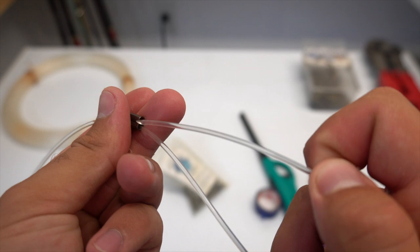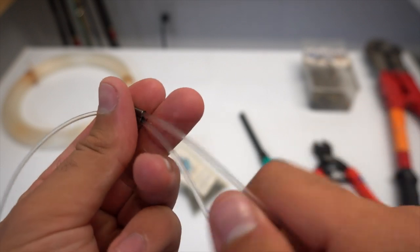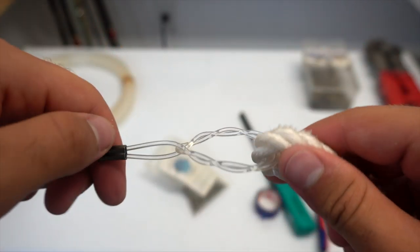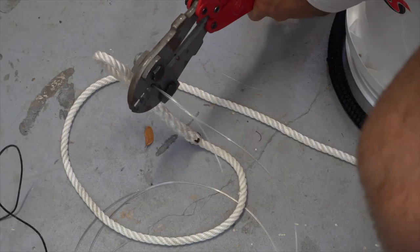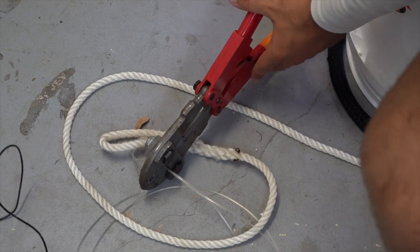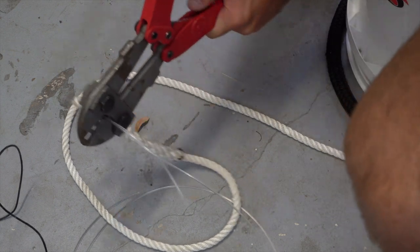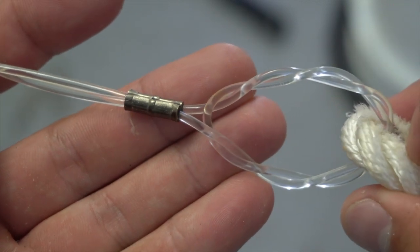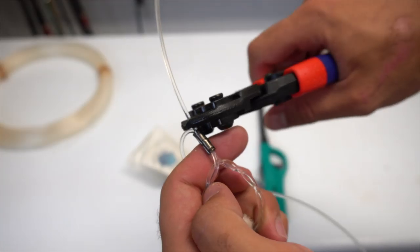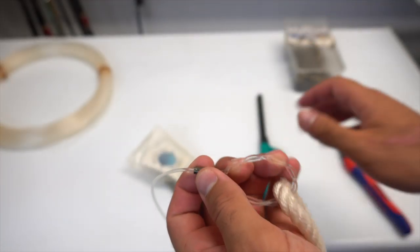And then all you do is you slide your tag end and the mono into the other side of the crimp and slide the crimp up right next to the loop. You then take your pair of crimpers and crimp each end to create a solid connection. You can then cut the tag end and you are ready to go.